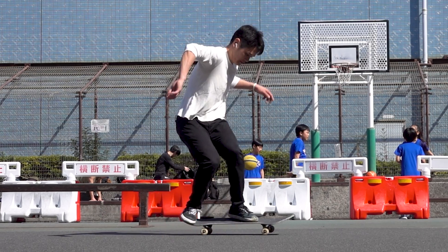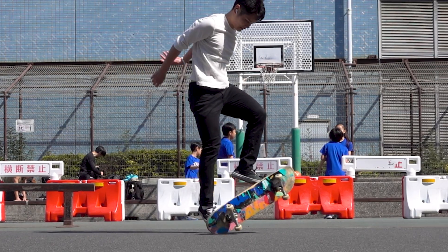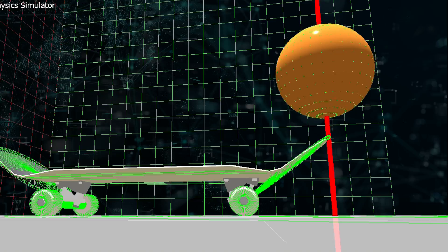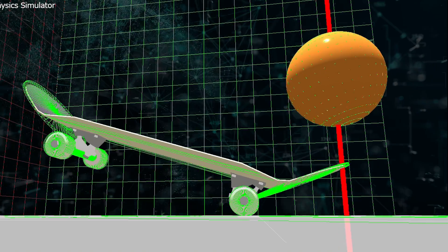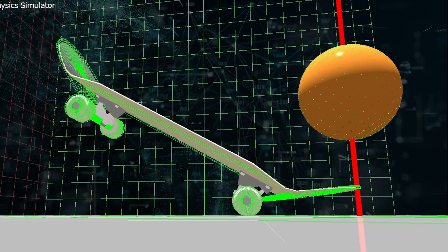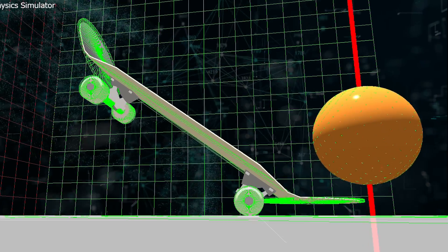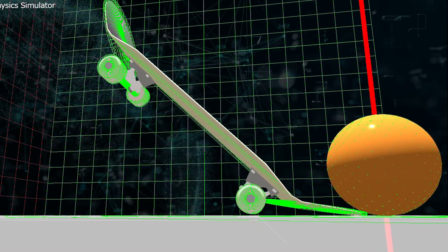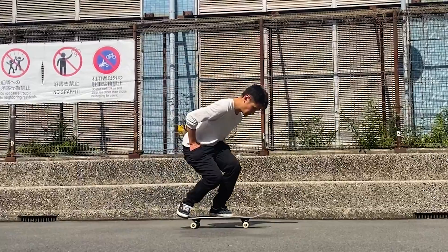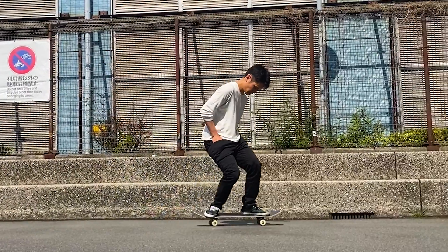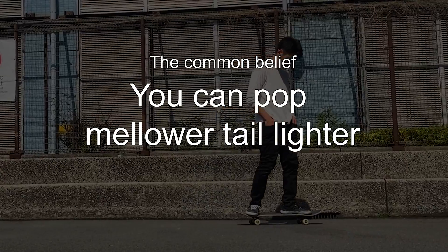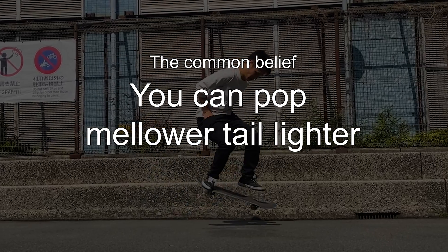In this state, you probably won't be able to flip the board by flicking it with your front foot, indicating that the 36-degree board requires a bigger force to lift its center of gravity and allow you to control it. For these reasons, the physics engine says the common belief that you can pop the mellower tail more lightly is correct.